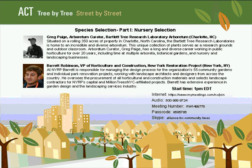Here to tell us more about that today is Barrett Robinson, who joined New York Restoration Project in 2007 and is responsible for managing the design process for the organization's 55 community gardens and individual park renovation projects, working with renowned landscape architects and designers from across the country. Barrett oversees NYRP's procurement for all horticultural and construction materials and selects landscape contractors for NYRP's Capital and Million Trees NYC affiliated projects. Before joining NYRP, Barrett worked in garden design and project management in New York City, responsible for project cost analysis, scheduling, site management, and materials procurement. He attended Ohio State University, majoring in agribusiness, and also attended the ATI Extension of Ohio State, majoring in landscape design and construction.